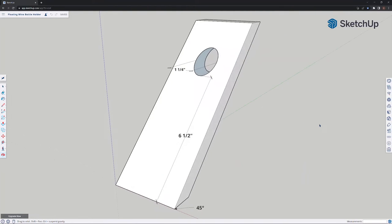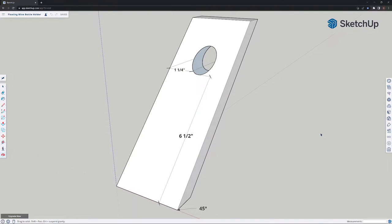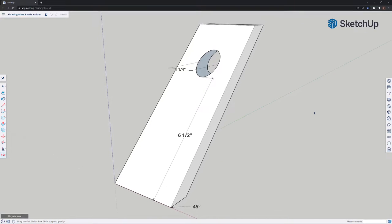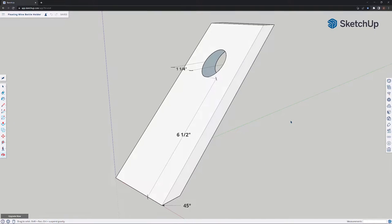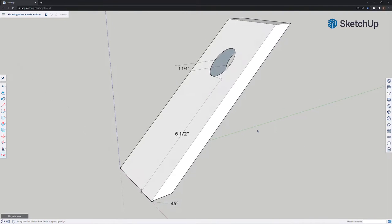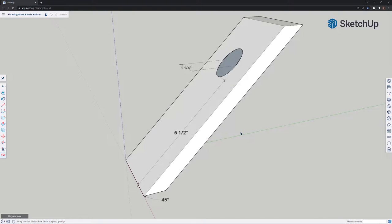The top angle doesn't matter, that can be anything you want. The second critical dimension is that the hole needs to be drilled six and a half inches from the bottom edge. And the third critical dimension is the diameter of the hole is one and a quarter inches. So as long as you get all three of these specifications right then your wine bottle will balance and you can change the width of the board or the thickness or the total length, the species of the wood, it doesn't matter.